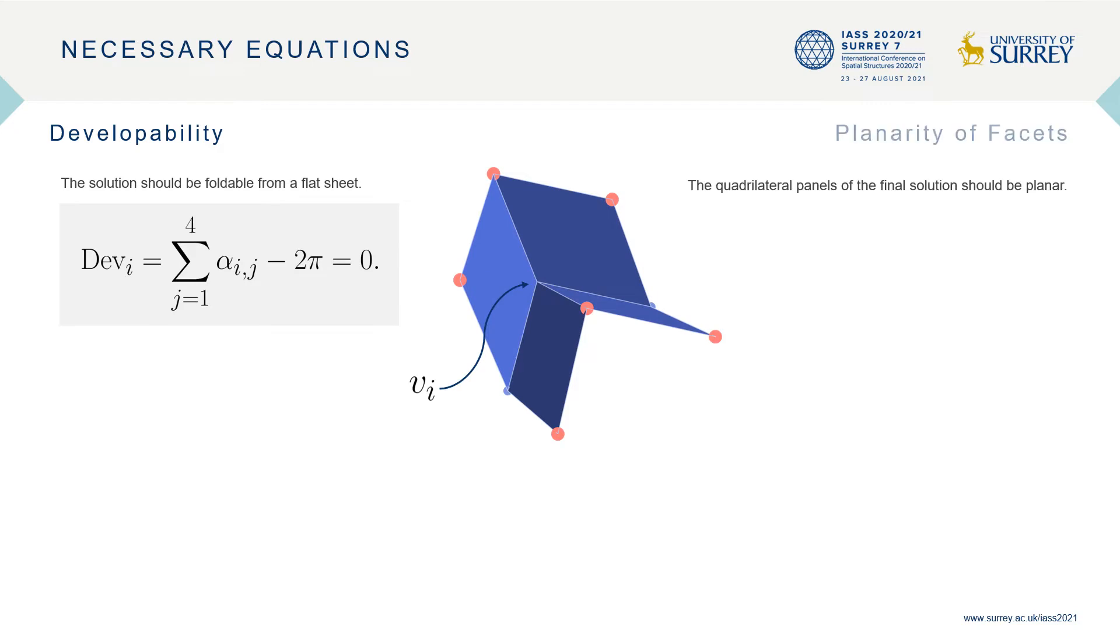The second constraint is the planarity or rigidity of facets. We assume the quadrilateral panels to be rigid and therefore not to deform. Hence, the volume enclosed by the vectors a, b and c should be equal to 0.